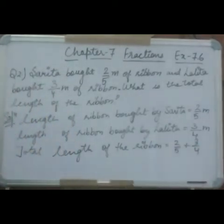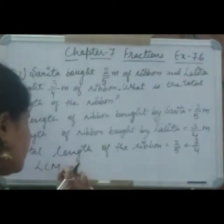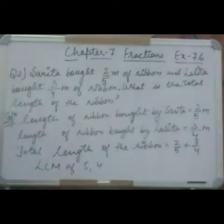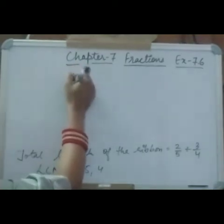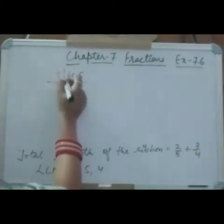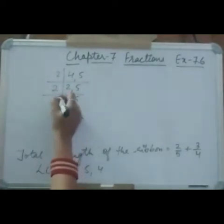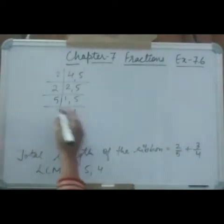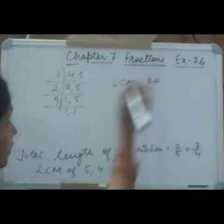Now you will make the denominators the same — only then can you add. So find the LCM of 5 and 4. For 4 and 5: 2 twos are 4, and 4 fives are 20. So the LCM of 5 and 4 is 20.